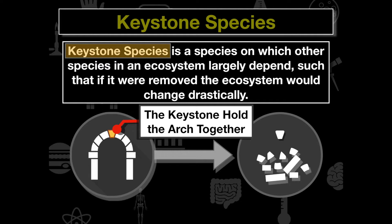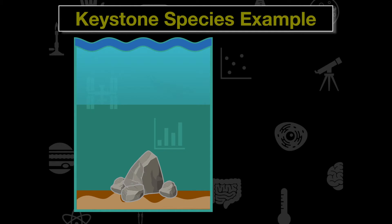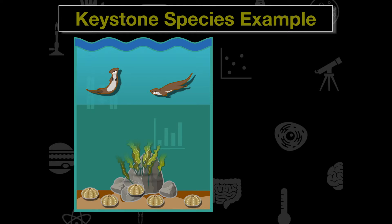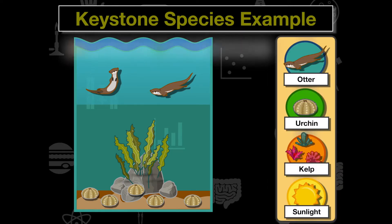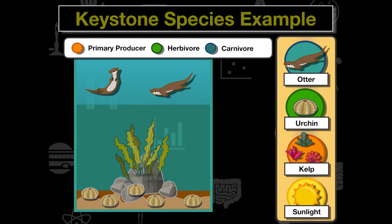Let's look at a couple examples of keystone species and how they influence ecosystems. Looking at this example here, we're going to see sea otters and their relationship with their ecosystem. We have urchins and kelp. Right now we're just going to focus on the three biotic factors: the sea otters, the urchins, and the kelp. In the food chain, we have our primary producer, herbivore, and carnivore. Sunlight feeds the primary producer — the kelp.